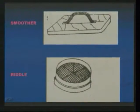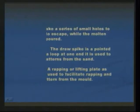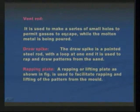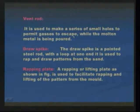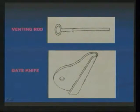Next one is riddle. The riddle is used just like a sheave — it is also named as a sheave — which is used for removing any unwanted impurities present in the sand. Next one is vent rod. It is used to make a series of small holes to permit gases to escape. After preparing a complete mold cavity, around the surface of the mold cavity we place holes with the help of the vent rod.